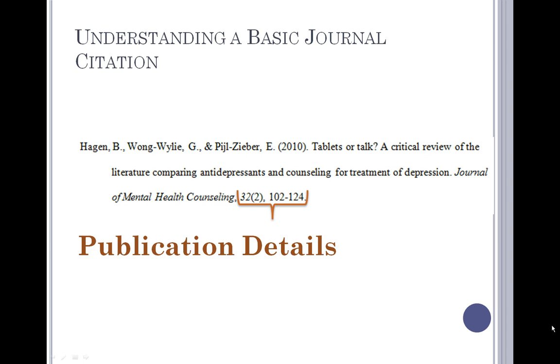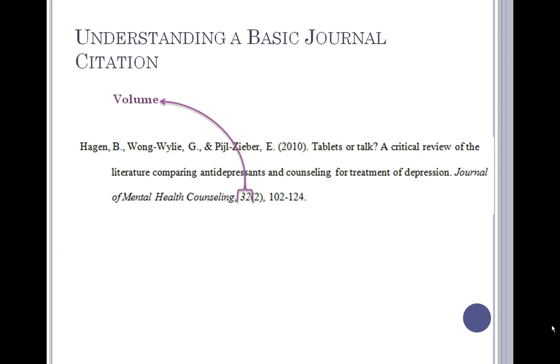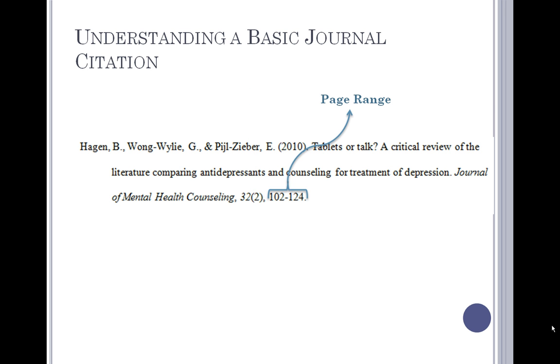Publications are typically divided into volumes, and the volume is given in italics. These volumes contain issues given in parentheses and followed by a comma. Finally, the pages the article appears on is given as a range.